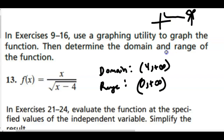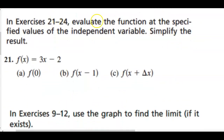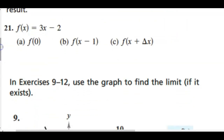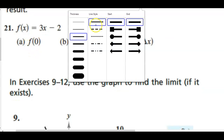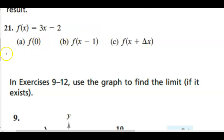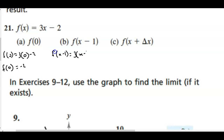Evaluate the function at specified values and simplify. For f of 0: f(0) equals 3 times 0 minus 2, which equals negative 2. For f(x minus 1): f(x minus 1) equals 3 times (x minus 1) minus 2, which distributes to 3x minus 3 minus 2, giving 3x minus 5. For the delta x expression, it doesn't simplify further.